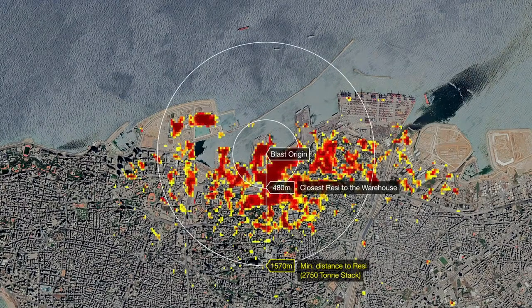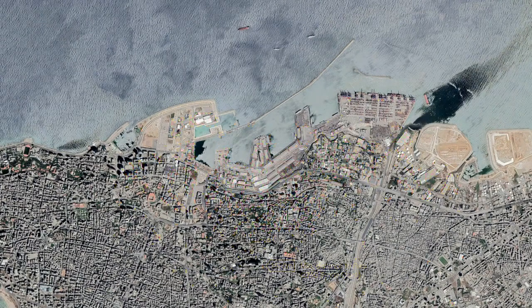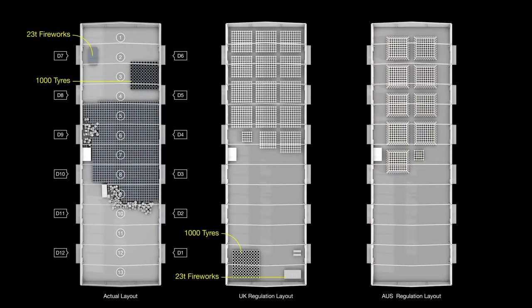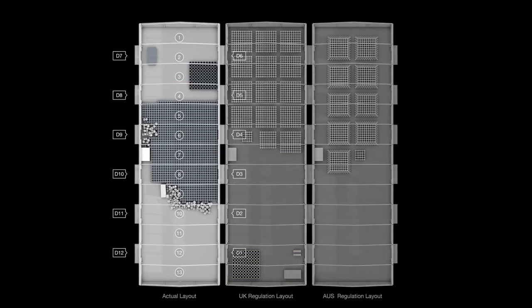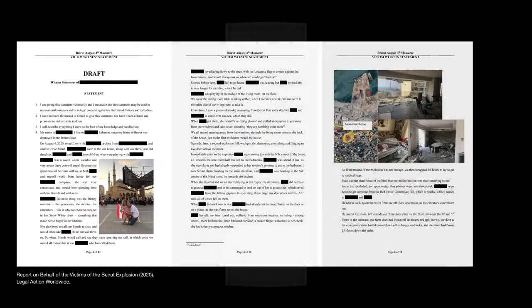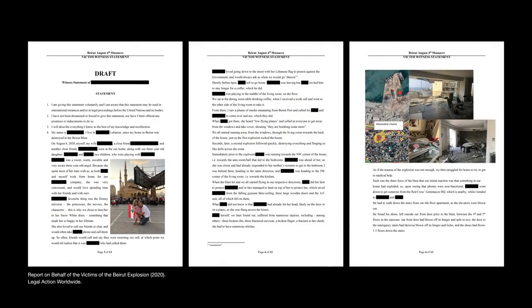NASA's Damage Map illustrates the extent of the blast. All these regulations prohibit the storage of combustible or explosive materials, such as tyres or fireworks, in proximity to ammonium nitrate. This fact highlights the substantial and sustained state negligence which led to the formulation of a makeshift bomb. Around 1,000 of the survivors' and victims' families have called for an independent investigation and public access to all relevant documents.